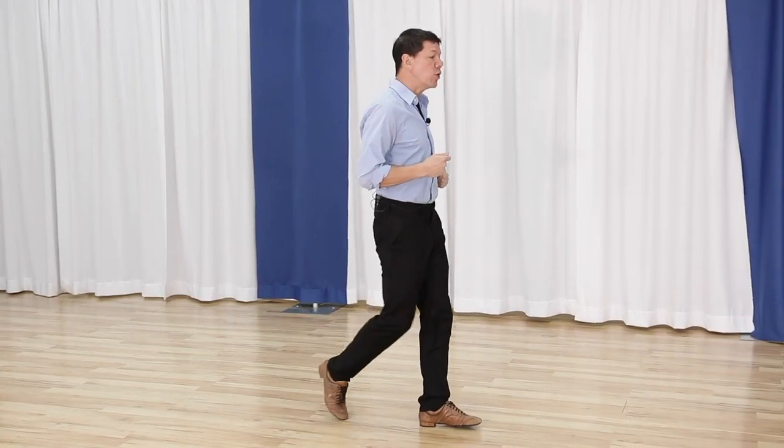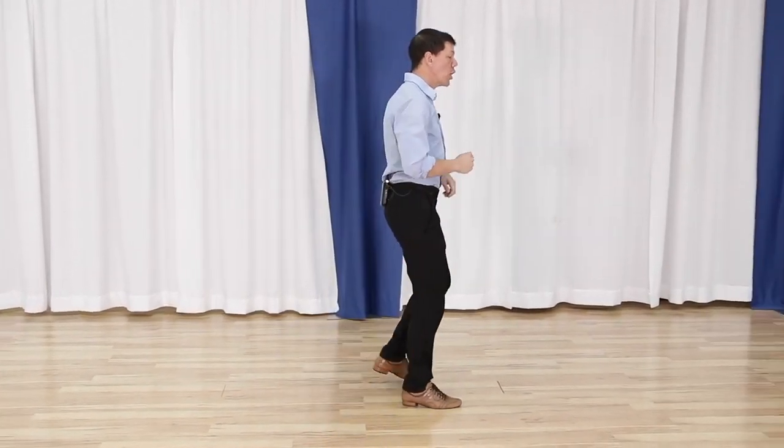First things first, we have to understand the basics of foxtrot. Foxtrot is started with the leader's footwork—I'm going to be talking primarily leader's footwork, reverse for the followers—going forward for slow, slow, and a quick, quick to the side. So the basic of foxtrot is slow, slow, quick, quick.